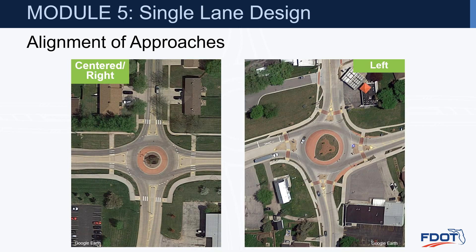Looking at real photo examples of the different alignment approaches: the one on the left is centered, if not slightly to the right — you can get into the circle fairly quickly, resulting in faster entry speeds and more curvature on the exits. The picture on the right shows the offset left design, with better control of entry speeds and straighter exits due to that twisting.